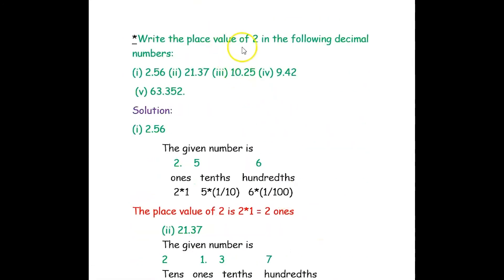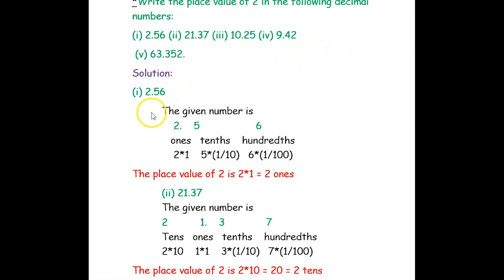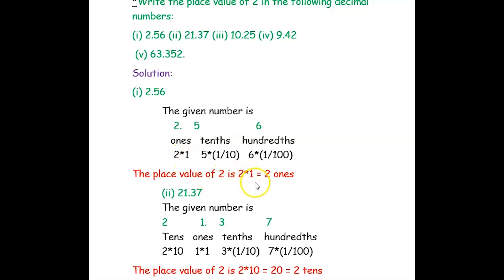Now we write the place value of 2 in the following decimal numbers. The first number is 2.56. The digit 2 is before the decimal point, so it is in the integer part — specifically the ones place. So the place value of 2 is 2 × 1, that is 2 ones.